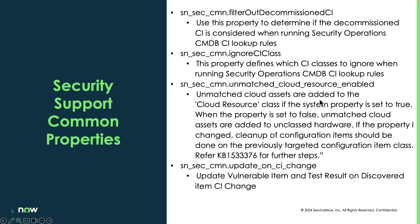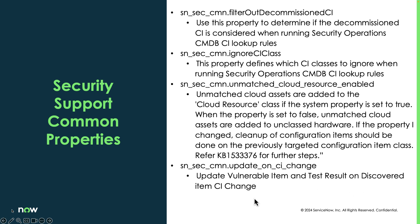The unmatched cloud resource enabled property determines where cloud resources are going to be created. If the property is set to false, it's going to create it in unclassified hardware; otherwise it'll create it in the cloud resource. This is important when we get into IRE and how IRE is going to reclassify any of these devices. The update on CI change property means that when you reapply CI lookup rules and those rules find a different match than before, it will go out and update the vulnerable item, test result, and discovered item with that CI change — syncing all your data. It's important to leave this one enabled.